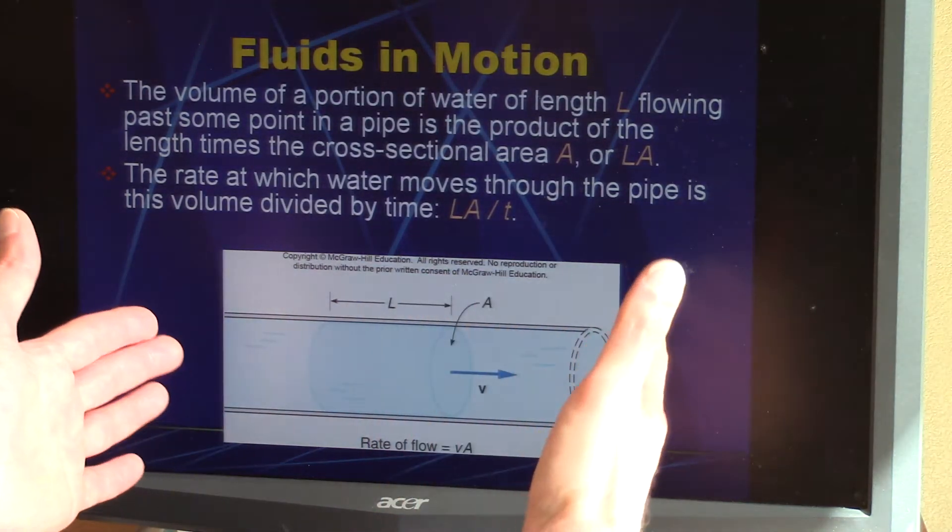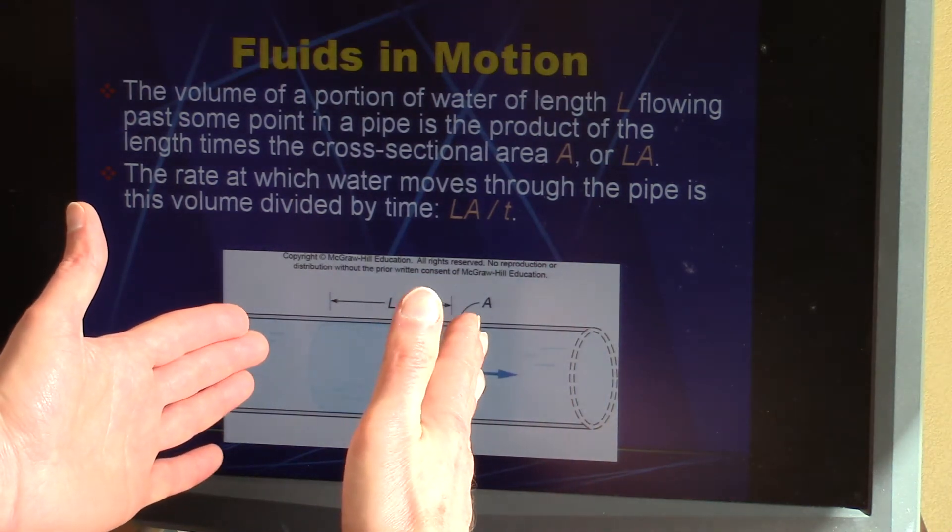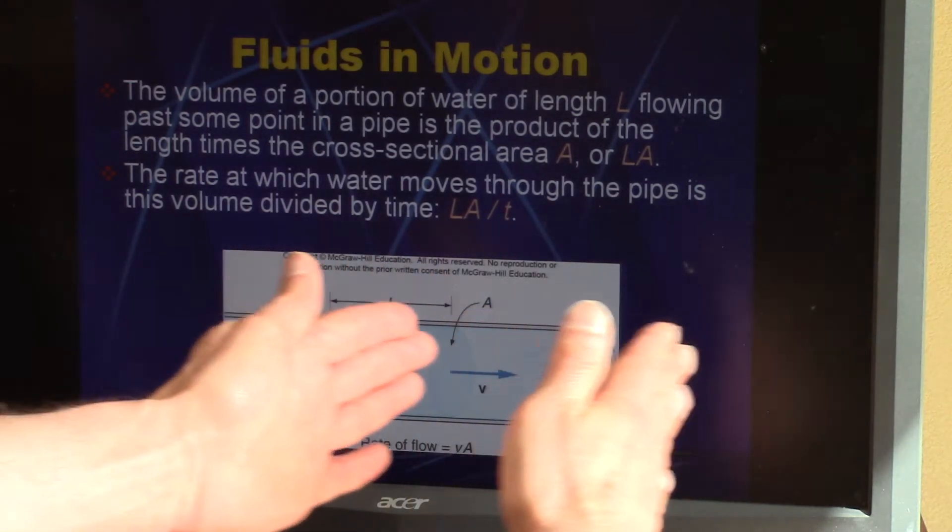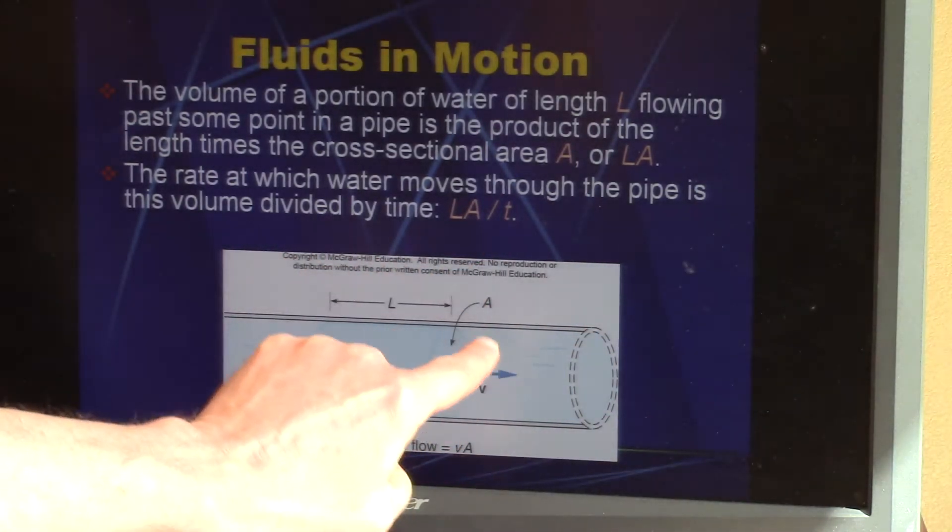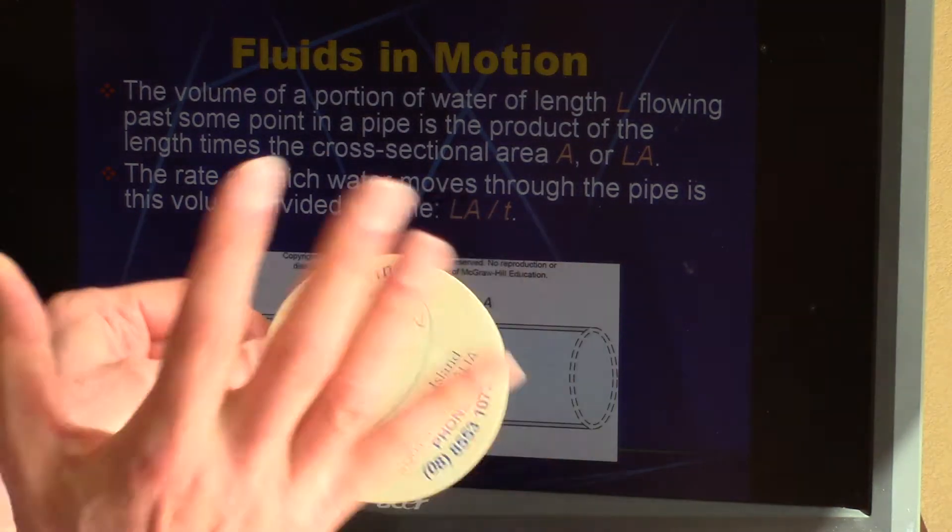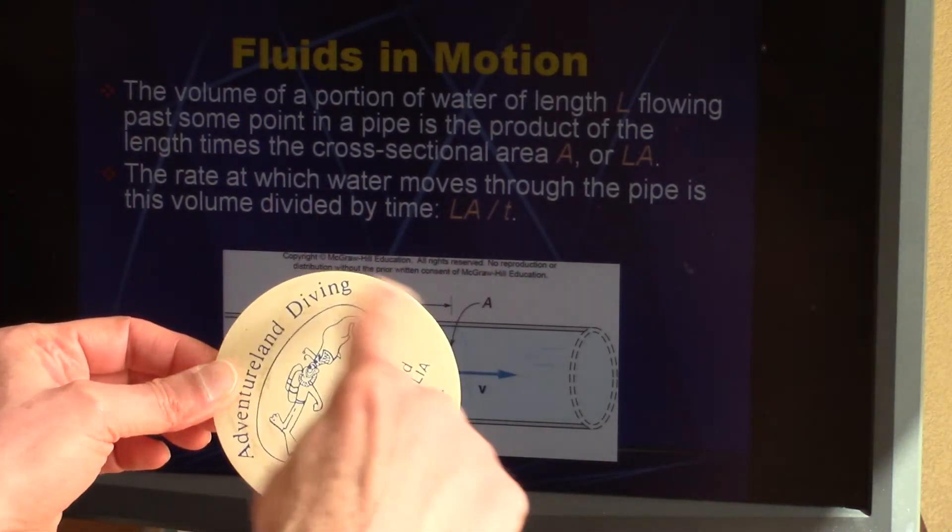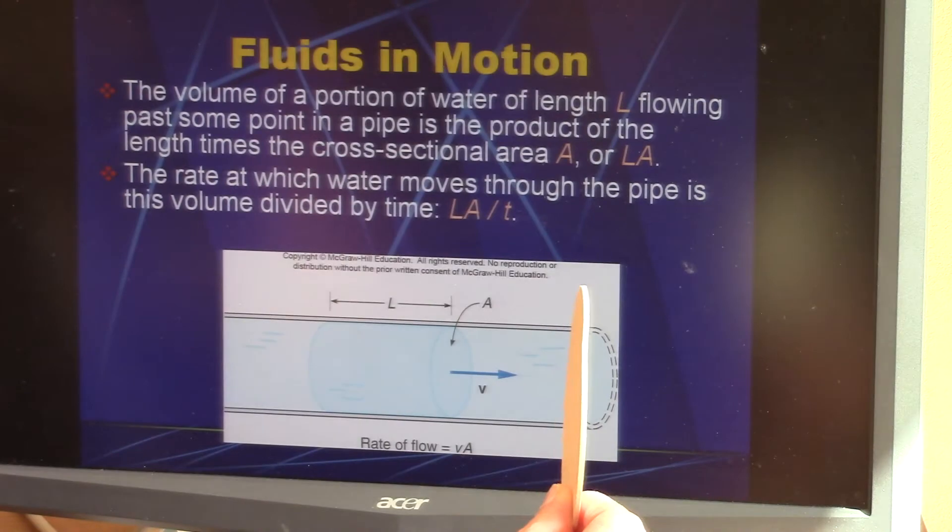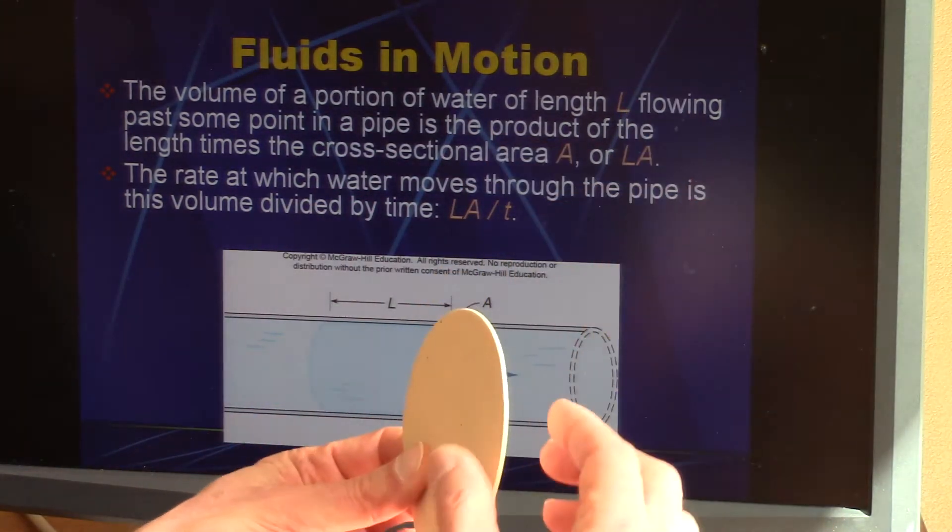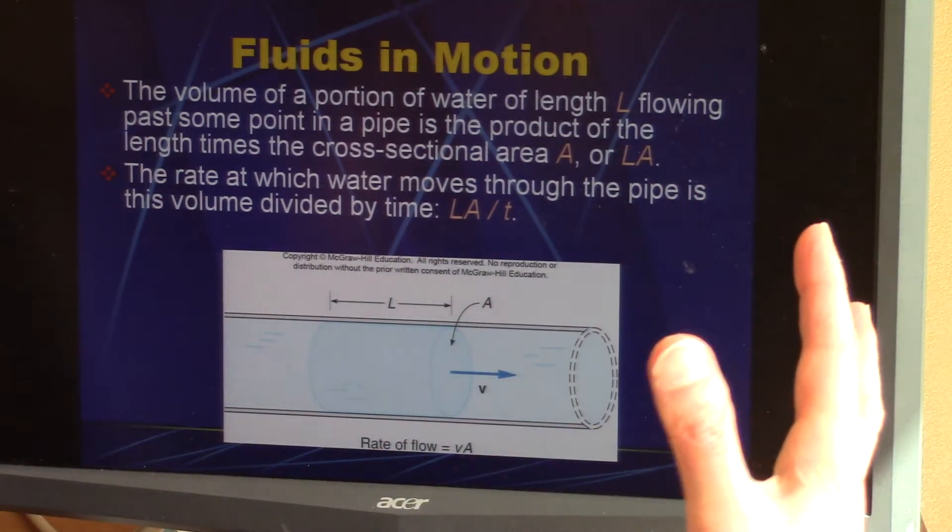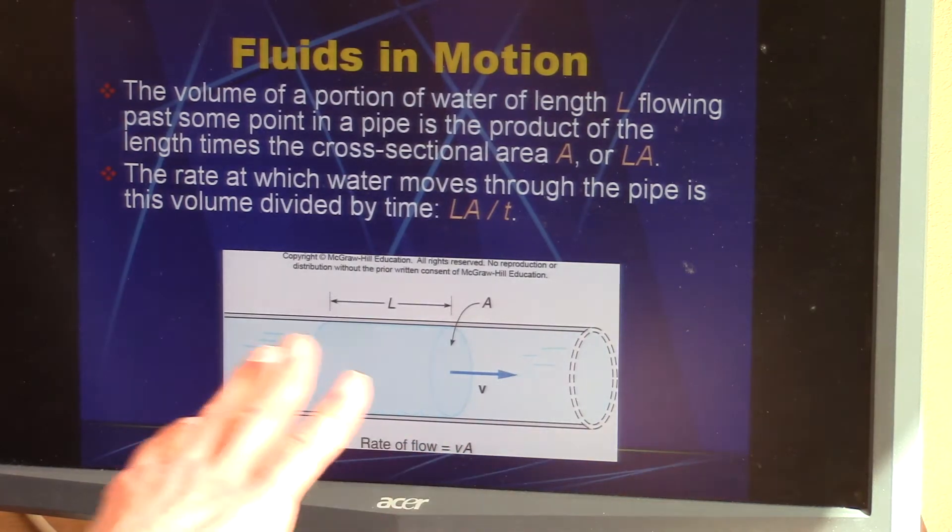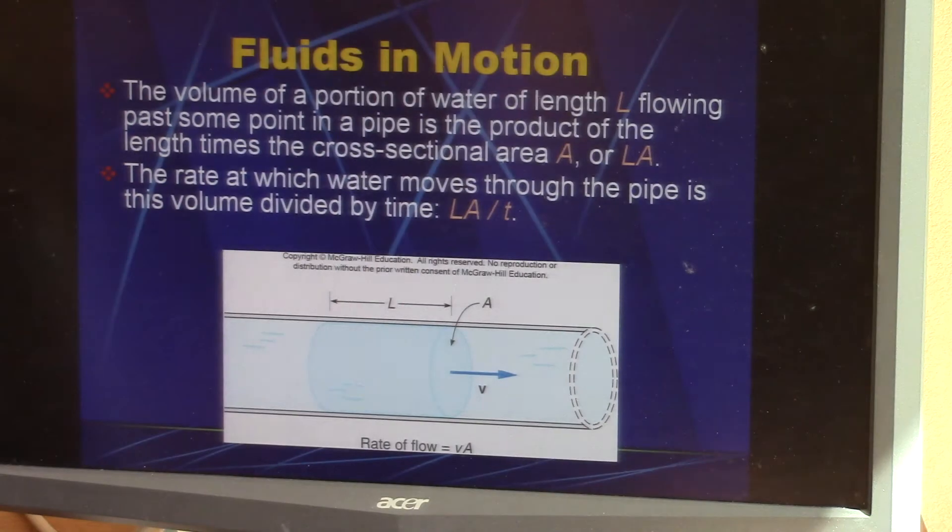Here it shows you have a pipe and there's a volume of water going through. You have the cross-sectional area. If it's a pipe it would be a circle. The length of the pipe times the area of the circle, that's the volume of the pipe for that chunk. The rate is how much of that is flowing per unit time.